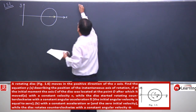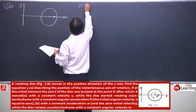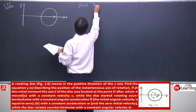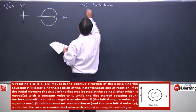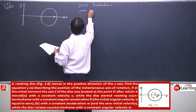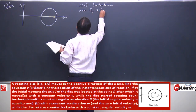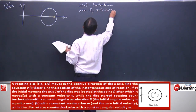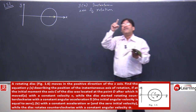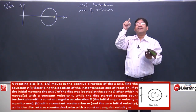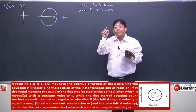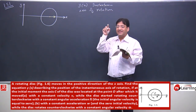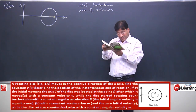What is the axis of rotation? The instantaneous axis of rotation is the locus of that point which remains stationary at that instant. The problem is based on this definition.